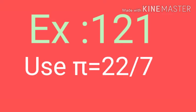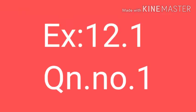Now we have to discuss Exercise 12.1. In this session, it is given that unless stated otherwise, use Pi equal to 22 by 7. So, the first question.